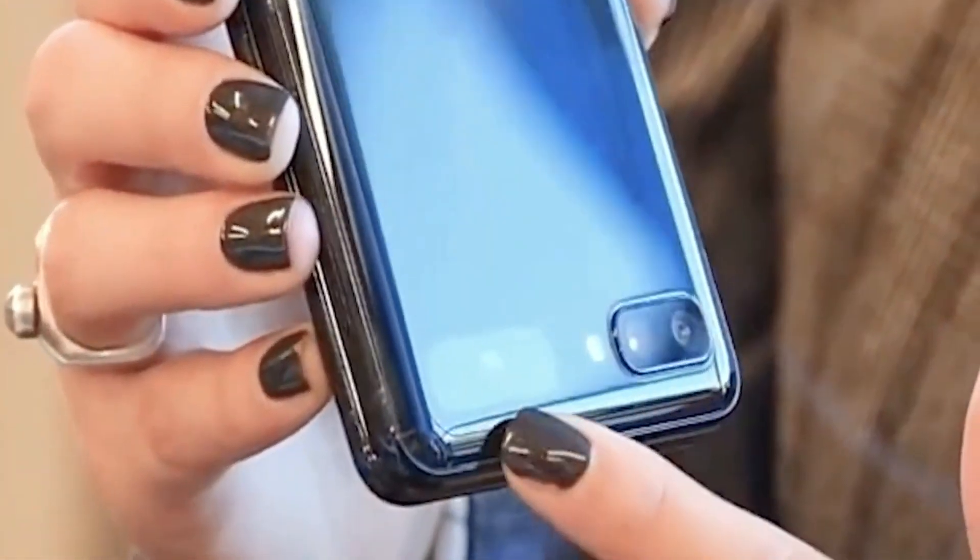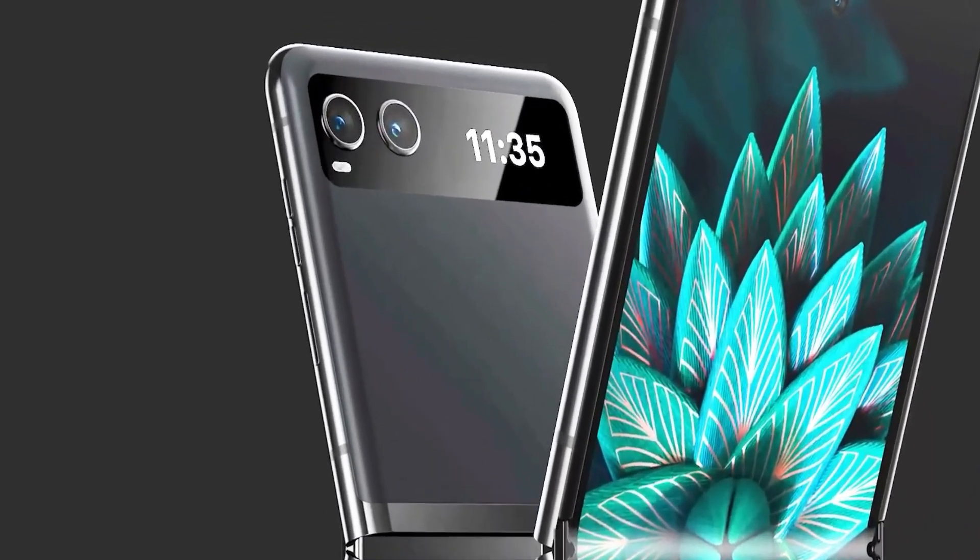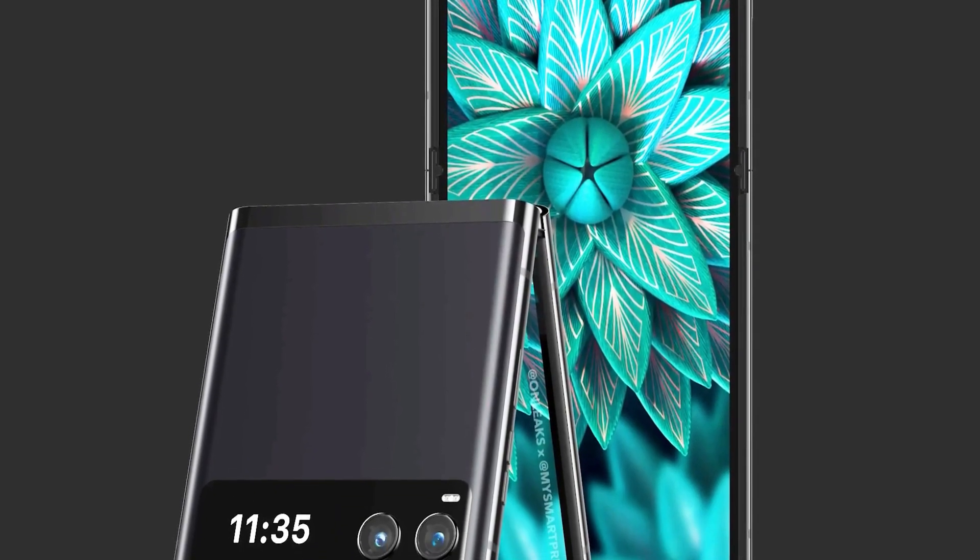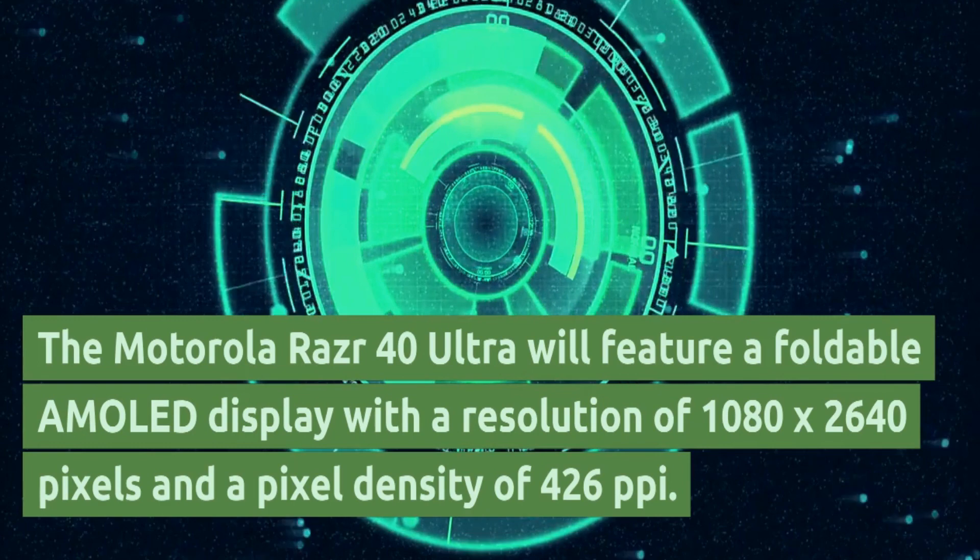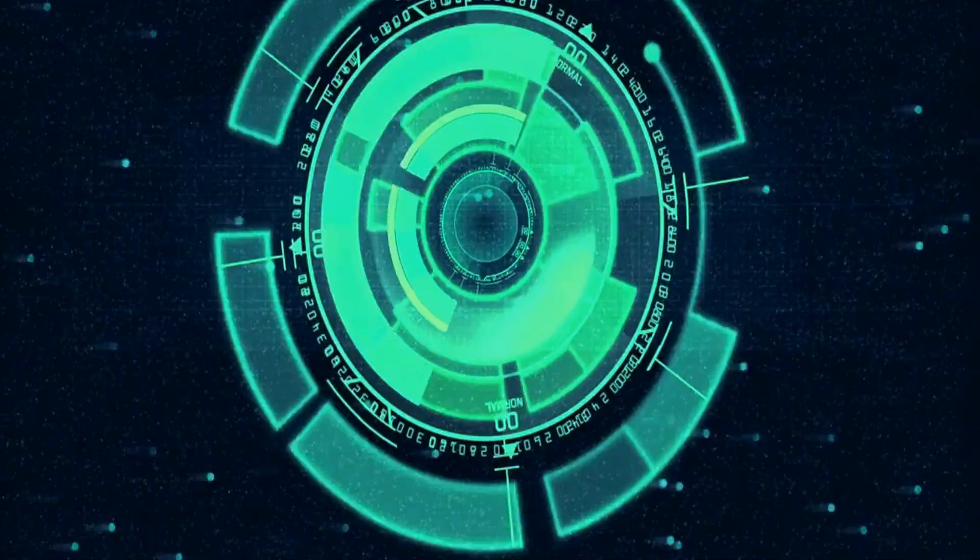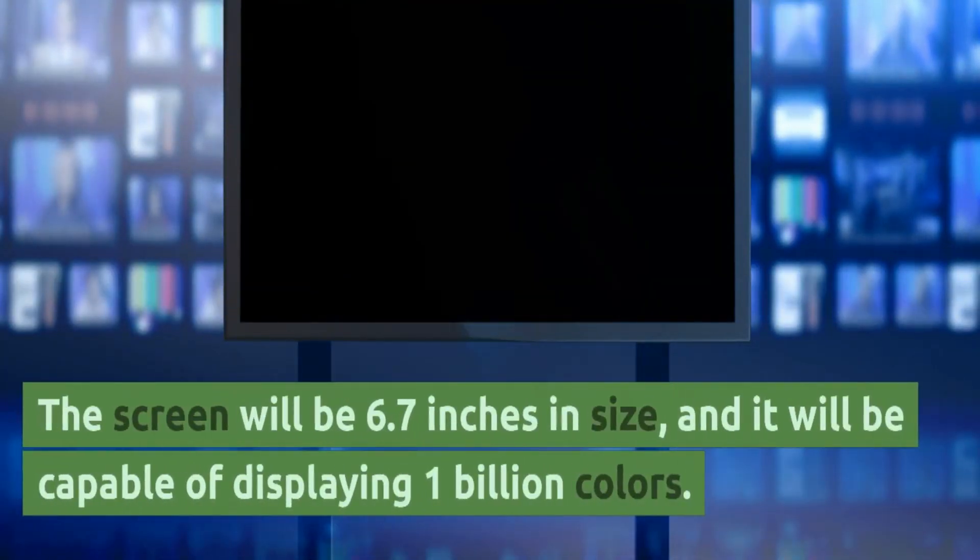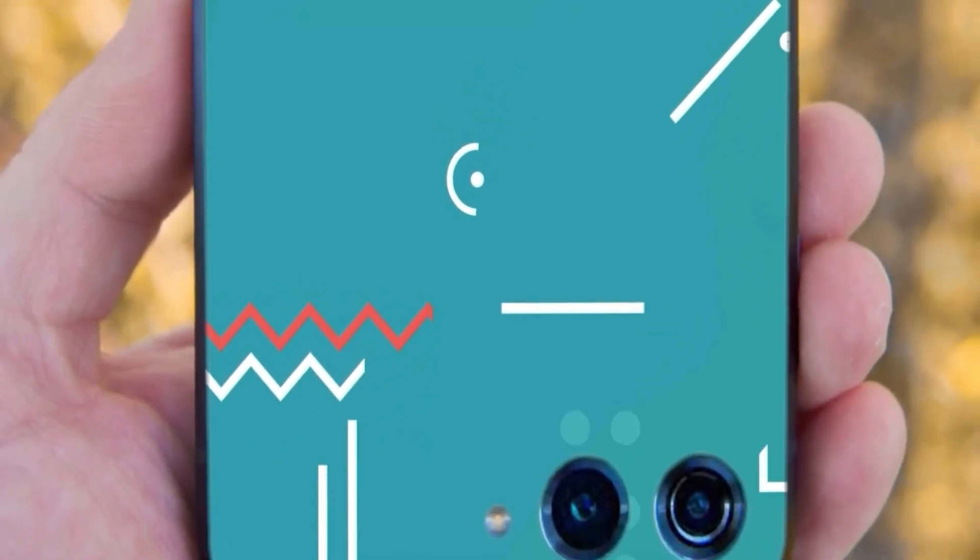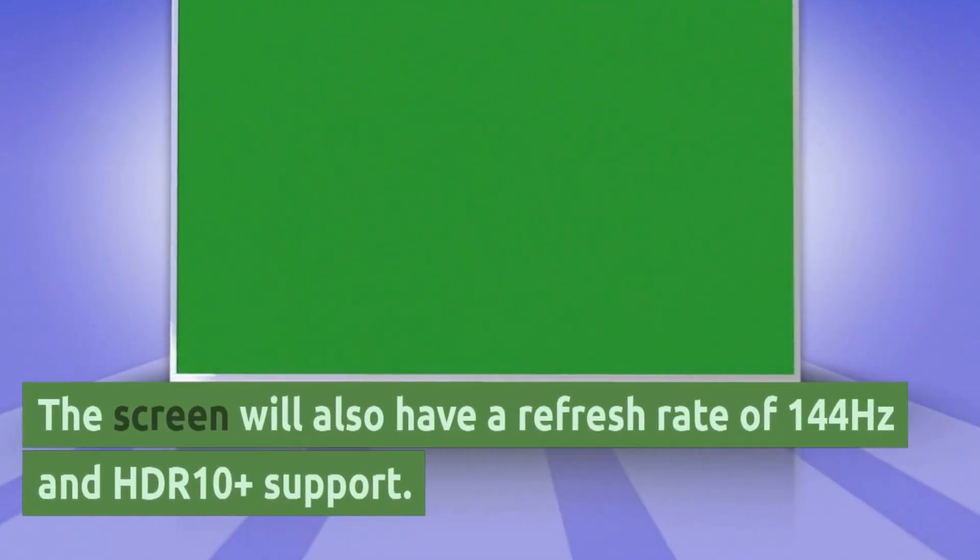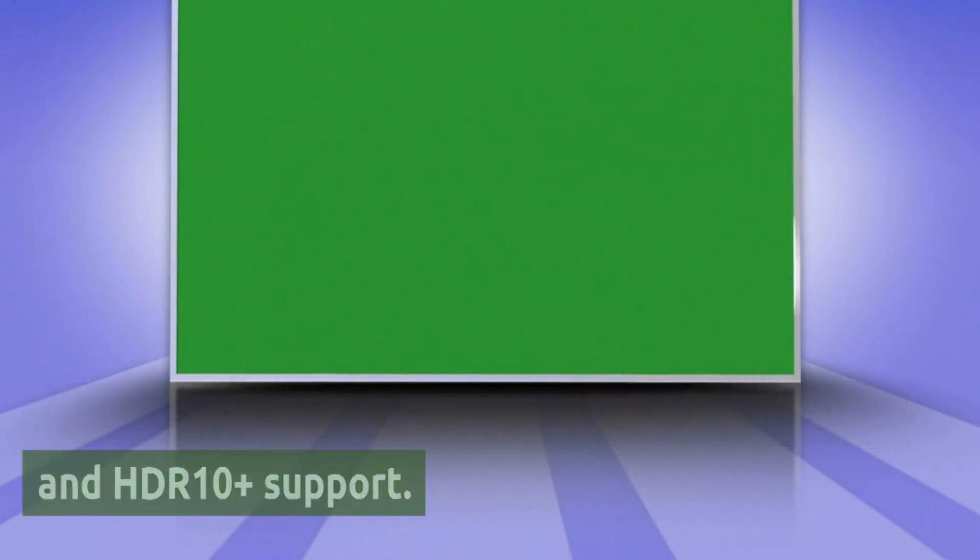Display. The Motorola RAZR 40 Ultra will feature a foldable AMOLED display with a resolution of 1080 by 2640 pixels and a pixel density of 426 pixels per inch. The screen will be 6.7 inches in size and it will be capable of displaying 1 billion colors. The screen will also have a refresh rate of 144Hz and HDR10 plus support.